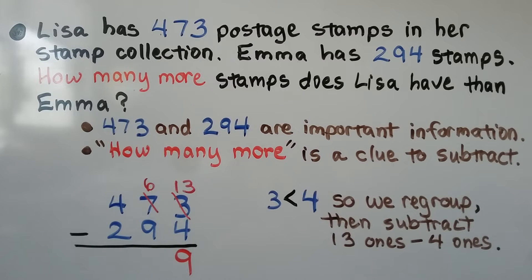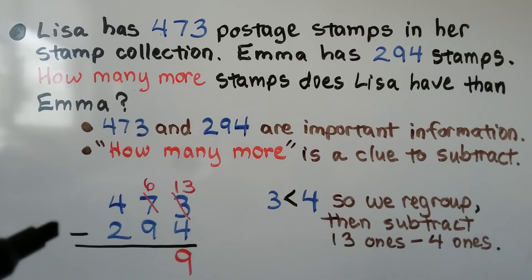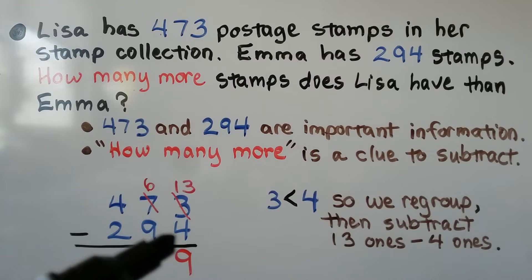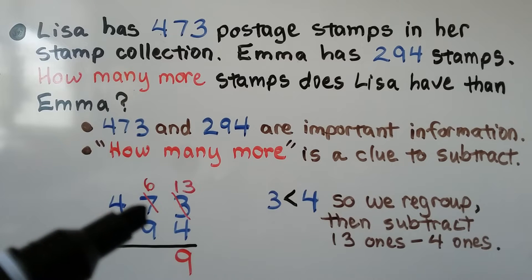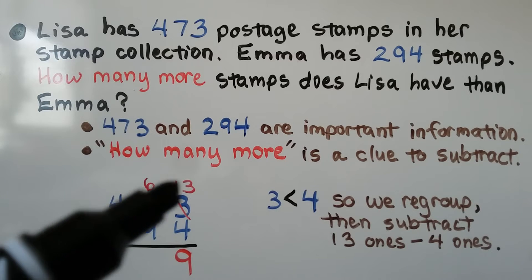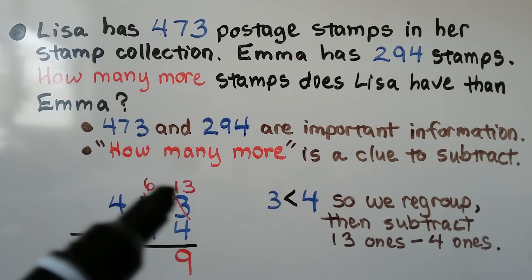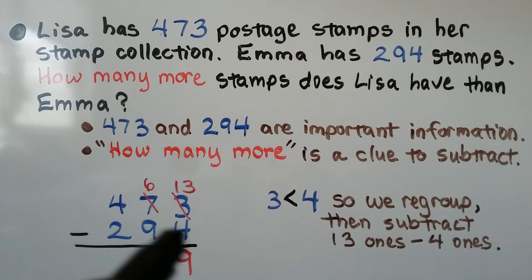Lisa has 473 postage stamps in her stamp collection. Emma has 294 stamps. How many more stamps does Lisa have than Emma? 473 and 294 are the important information. The phrase 'how many more' is a clue to subtract — we need to find the difference between the two numbers. We do 473 minus 294. We look at the ones place, and this 3 is less than 4, so we need to regroup from the tens place. The 7 becomes a 6, and we give that 10 to the ones place. Instead of 3 ones, we now have 13 ones, and we can take 4 away to get 9.